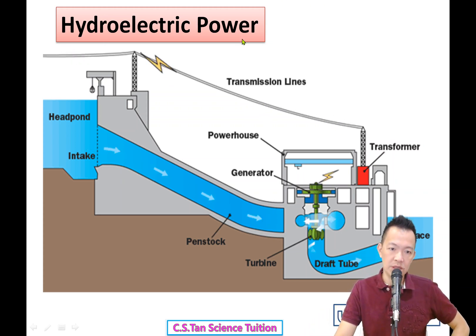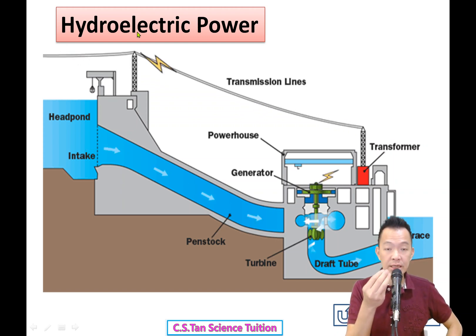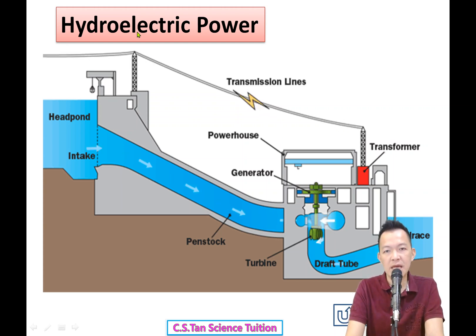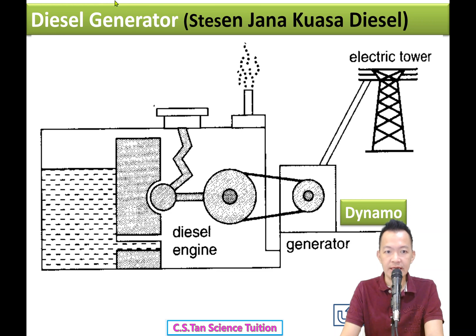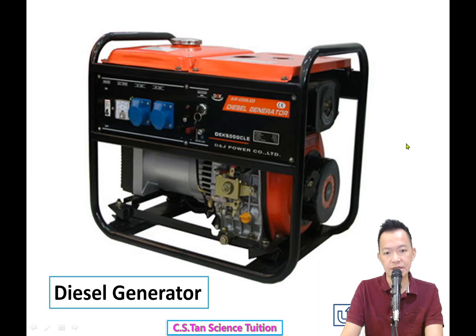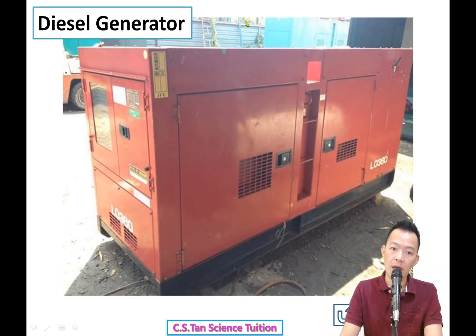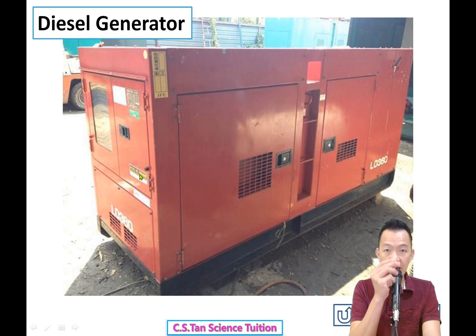Hydroelectric power is efficient and clean - 很有效率能更新不污染环境. But Malaysia only has a few hydroelectric plants because building them requires a lot of money, and our geography 地理环境 makes it difficult. Next is the diesel generator 才有的发电器. Using a diesel engine like a lorry 好像lorry这样, the engine turns the dynamo, and the dynamo generates electricity.